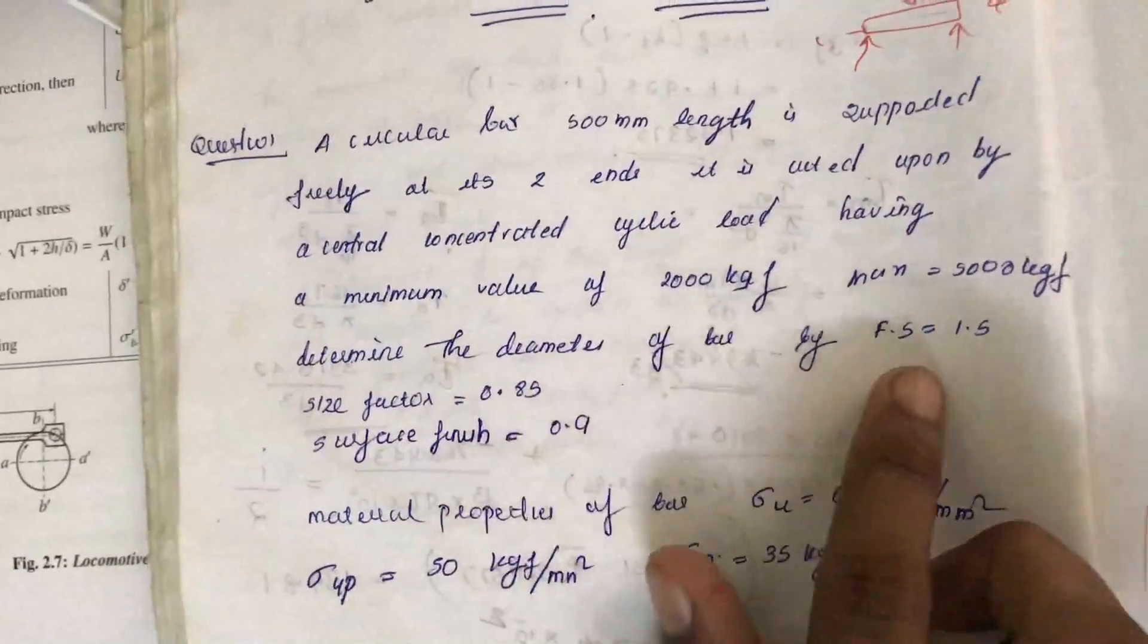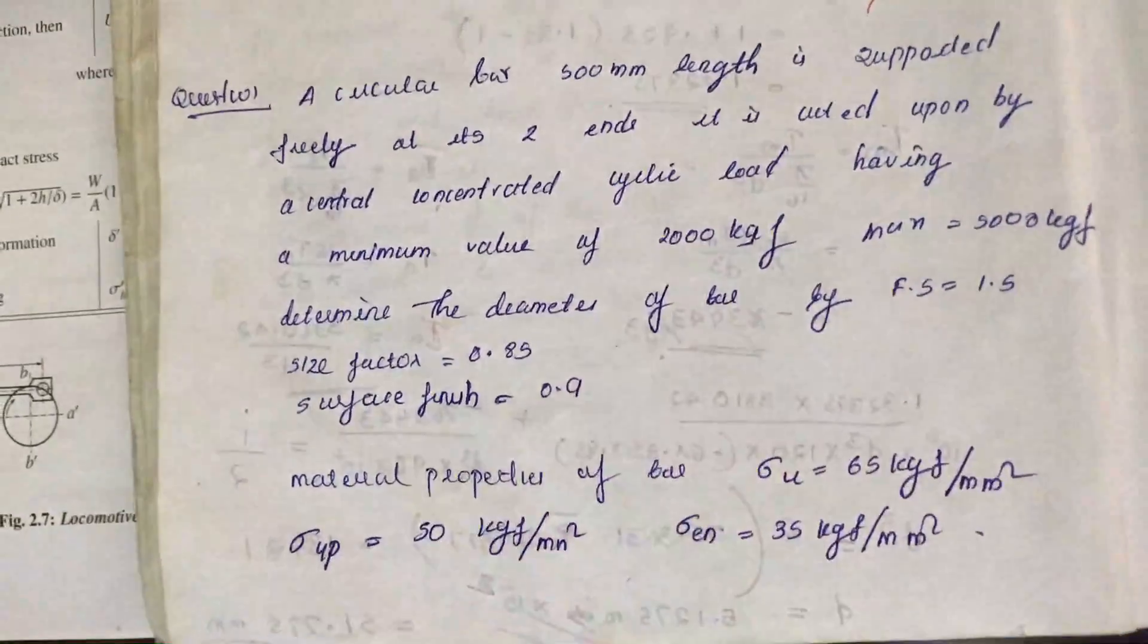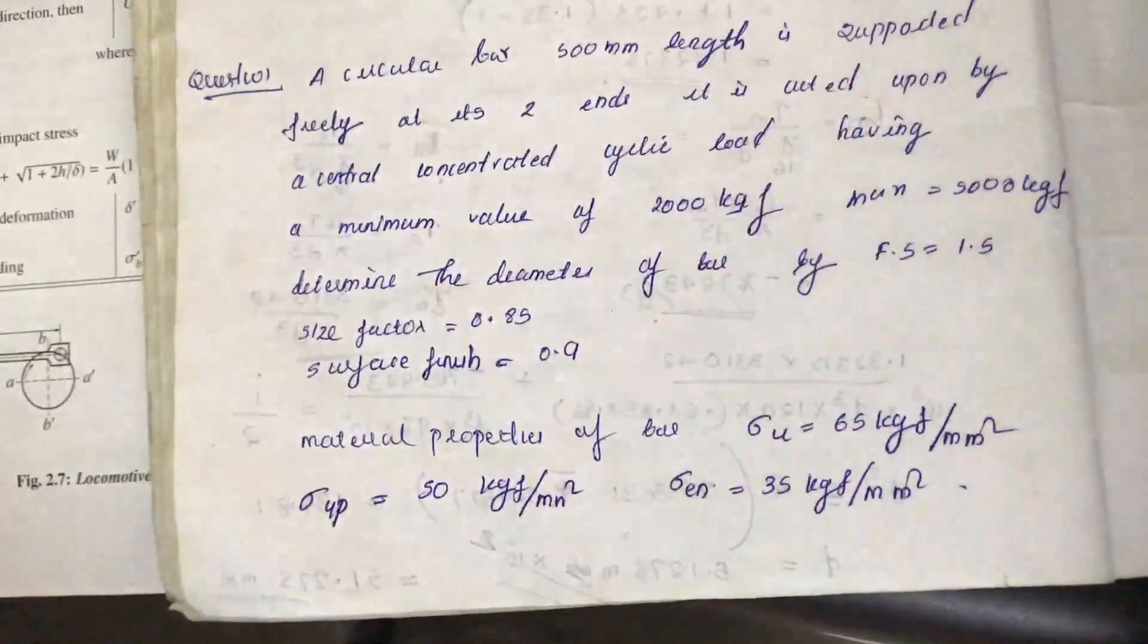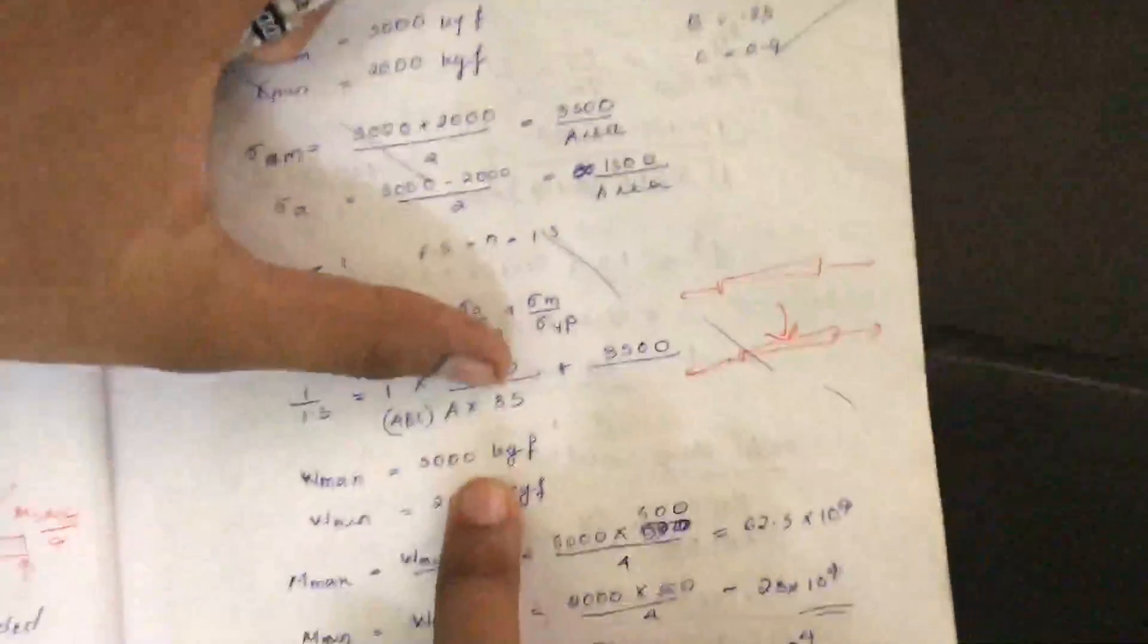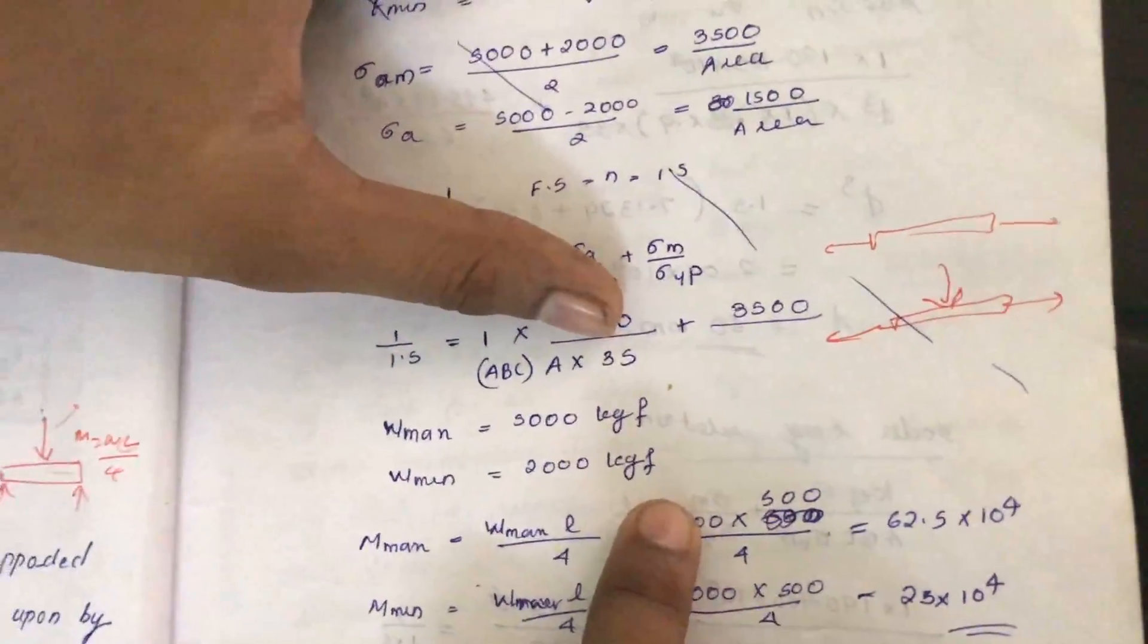Now determine the diameter of the shaft. Given factors include safety factor, size factor, etc. W max equals 5000 kgf and W minimum equals 2000 kgf.